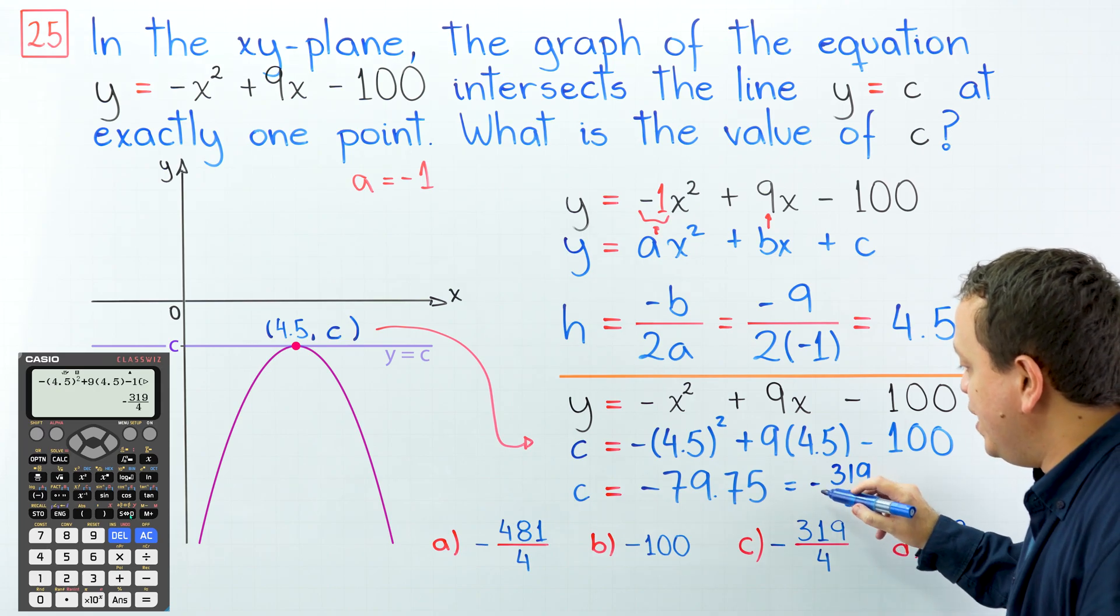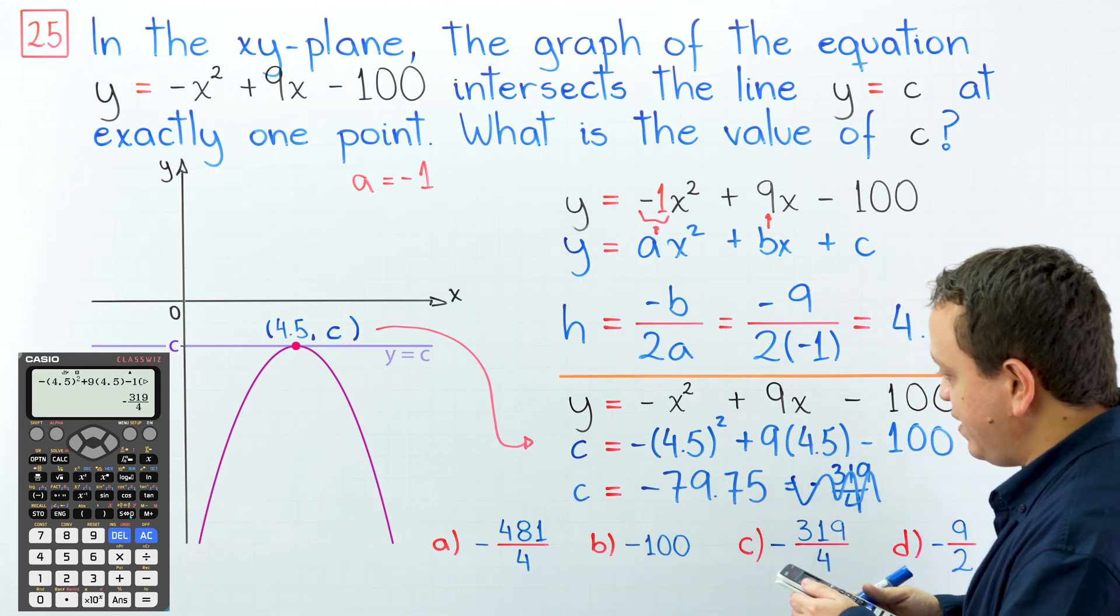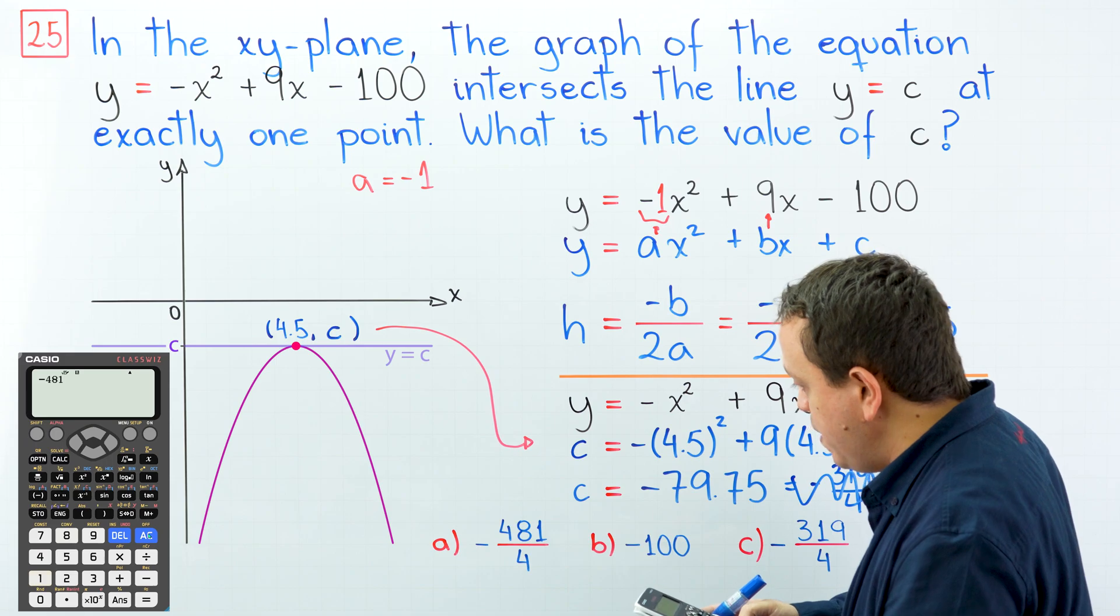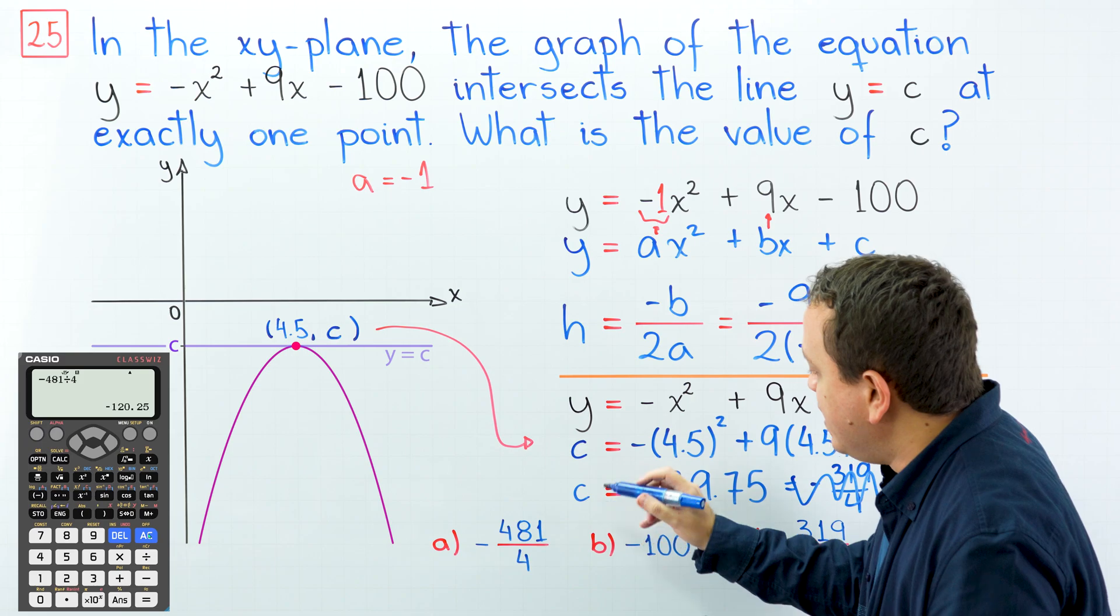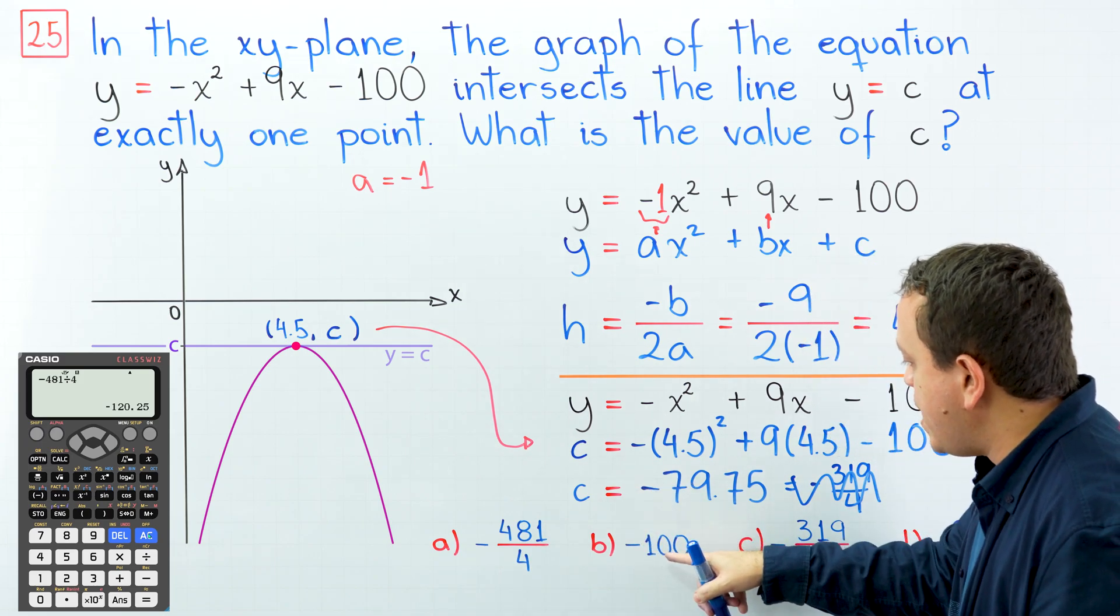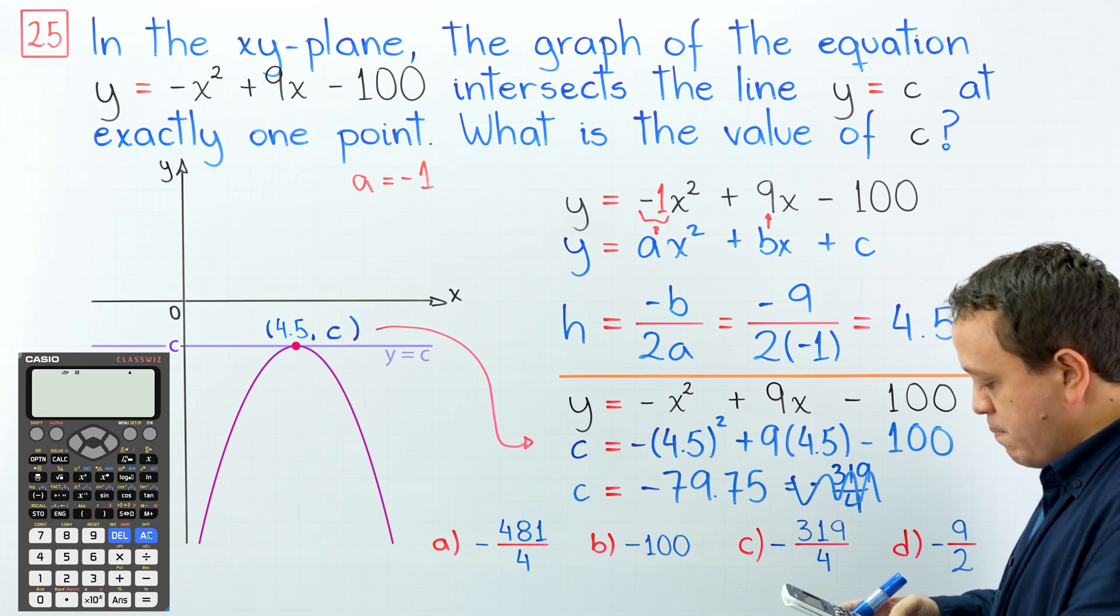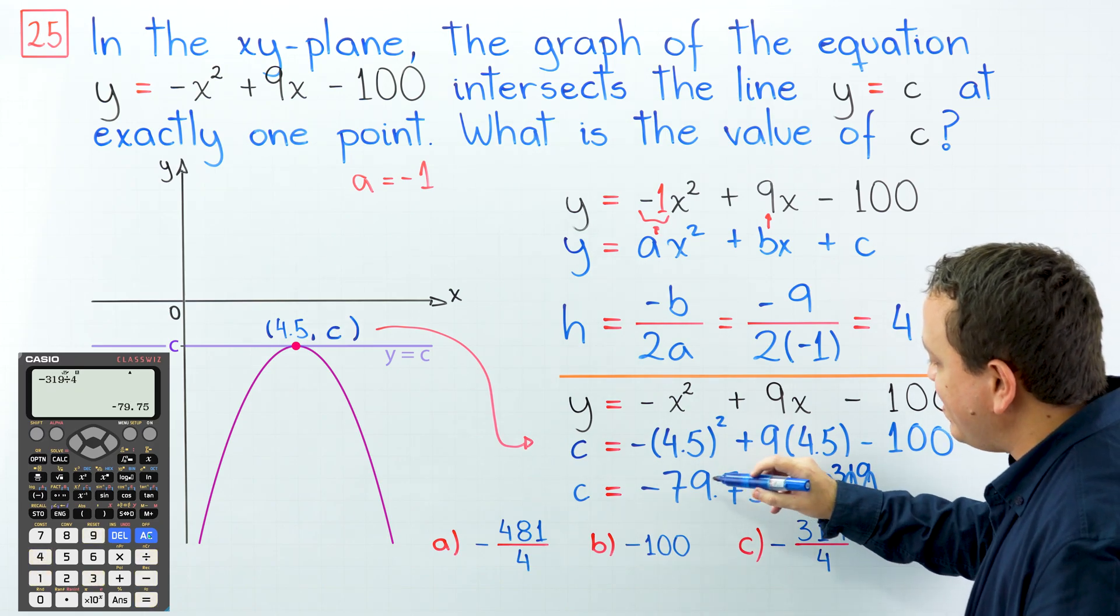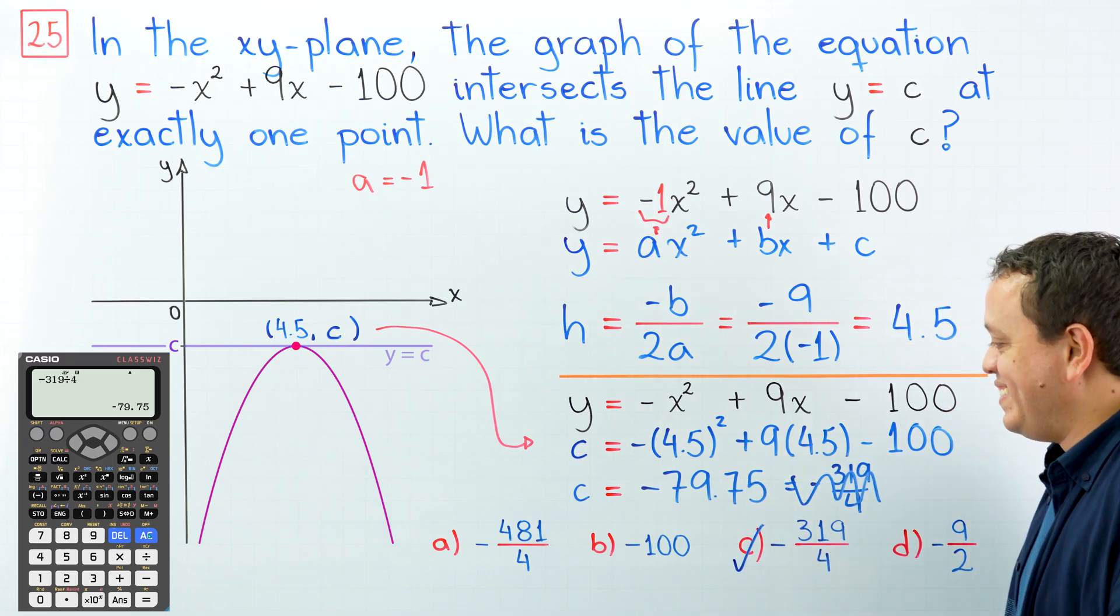If you don't have this button, don't worry about it. You can try with the choices. For example, here we have -481 divided by 4, and this is equal to -120.25. This is not our answer. Here we have -100. No, this is not our answer. Finally, here we have -319 divided by 4. That gives us -79.75. The choice c is the correct answer.